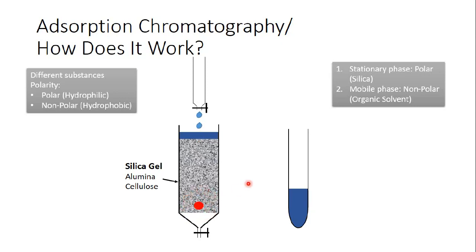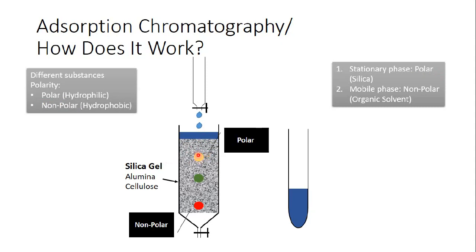The red substance you're seeing here is the most non-polar one. Then, the less non-polar substances will dissolve less in the mobile phase, stick a bit into the silica gel, and move slower. While the polar substances will not dissolve in the mobile phase and will adsorb on the silica gel, because they are polar and the silica gel is polar. So the polar substances will move really, really slowly through the stationary phase — not because of the mobile phase, but because of gravity — and they will be extracted at the end.